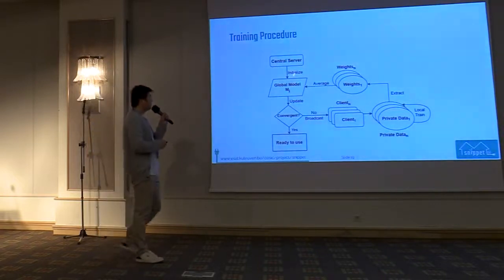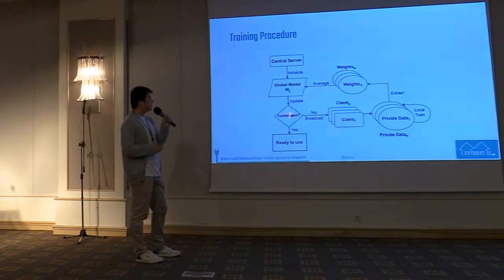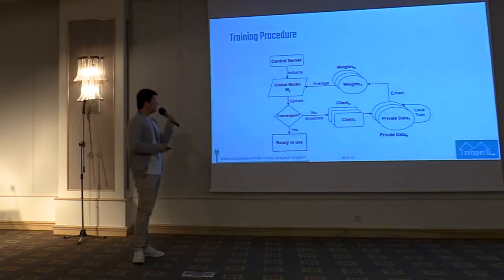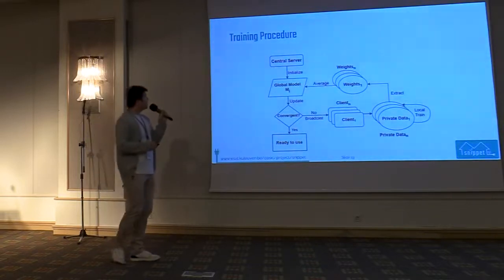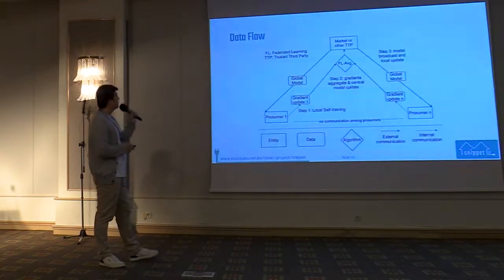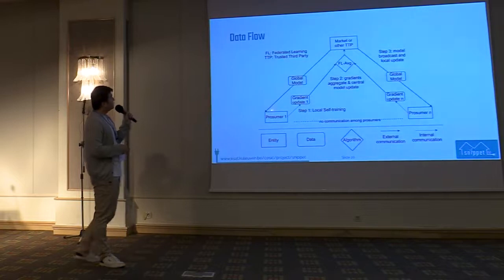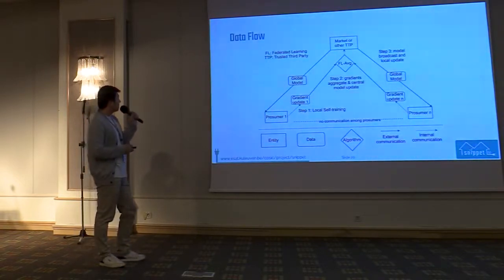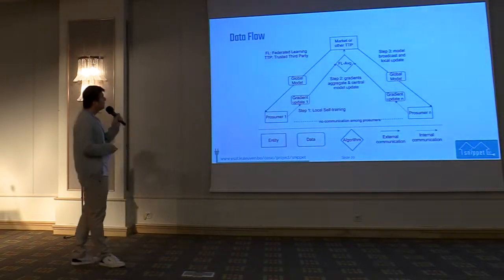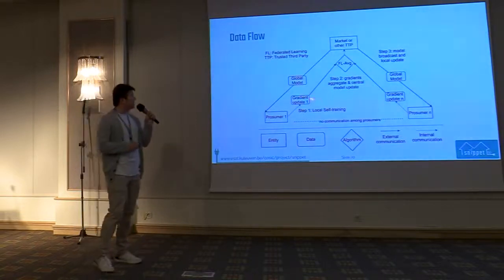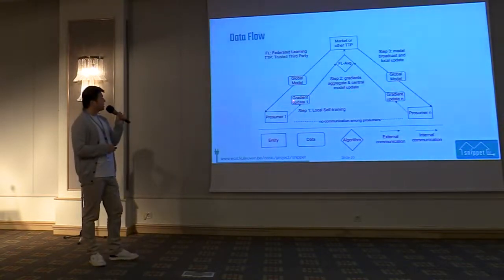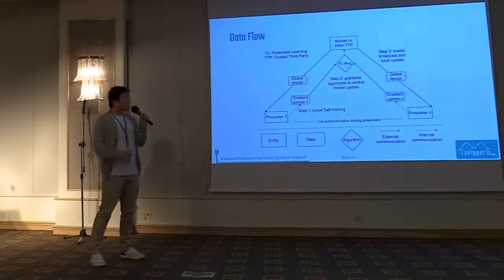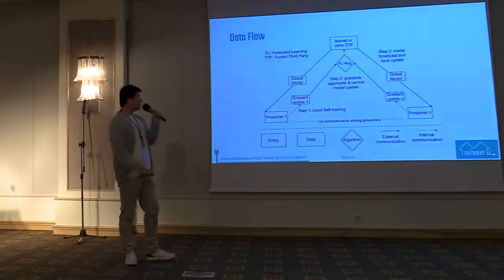The central server calculates new weights and uses them to update the original global model, then announces this updated global model to consumers again. After several rounds of training, we reach convergence and are ready to use the global model to predict community consumption. All private data is located at the consumers themselves. The only external communications are the shared global model — the same for every consumer — and gradient updates from each consumer. This largely increases the security of raw data, since individual consumption is never shared with anyone.